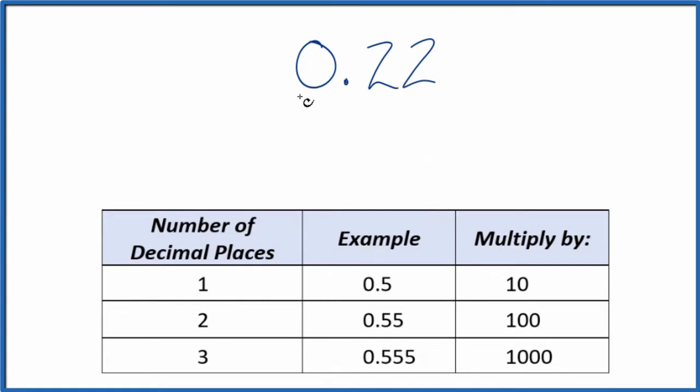First off, let's just call it 0.22 over 1, because that's still 0.22. We're just dividing by 1. Now we have the start of our fraction.